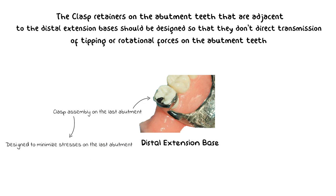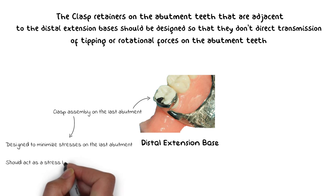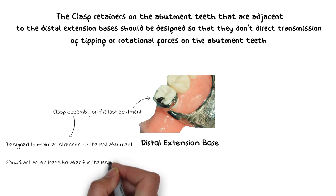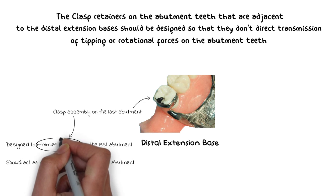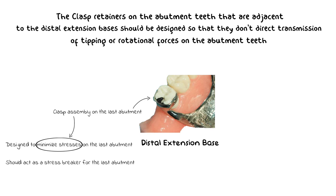In distal extension bases, failure of the last abutment is very detrimental for the entire denture. In fact, the clasp should be designed so that it acts as a stress breaker for those last abutments, decreasing the stress already placed on those teeth. Because the last teeth in distal extension bases are already under a lot of stress from the denture, additional stress will only result in eventual failure — therefore the clasp should not place any more stress on those abutments and, if possible, should act as a stress breaker.